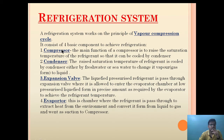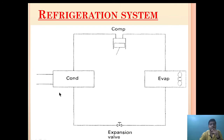The first is the compressor, second is the condenser, third is the expansion valve, and fourth is the evaporator. As you can see, this is the compressor, this is the condenser, this is the expansion valve, and this is the evaporator.